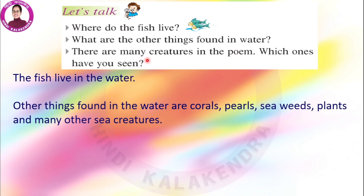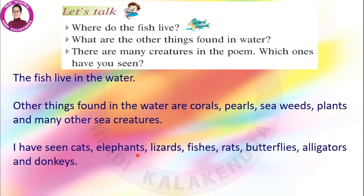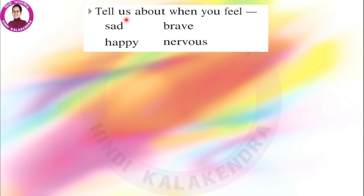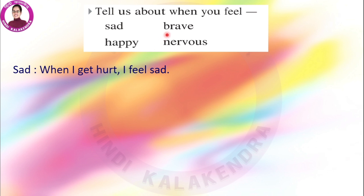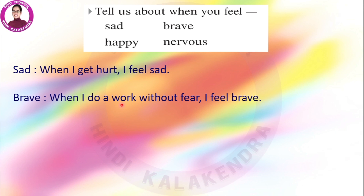There are many creatures in the poem — which ones have you seen? I have seen cats, elephants, lizards, fishes, rats, butterflies, alligators and donkeys. If you have seen fewer or more from the poem, you can add their names as well. Tell us about when you feel sad — when I get hurt, I feel sad. Brave — when I do work without fear, I feel brave.